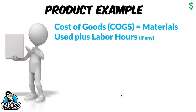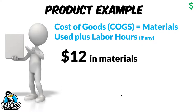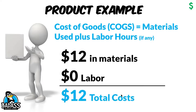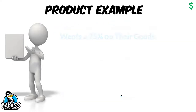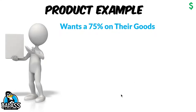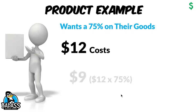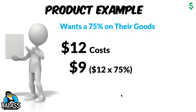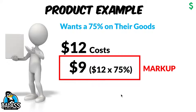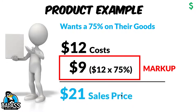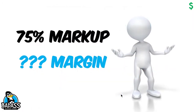Now let's do another example to help out. Let's say a business gets a new item to sell and that item costs them $12. There's no labor involved — they stick a price on it and put it on the shelf or their online store. The business wants a 75% markup on all their items. So we take the cost of $12 and multiply it by 75% — that means the markup is $9. So when they go to set their price, it's $12 plus $9, which equals $21. At this point, we know we have a 75% markup. But what is their gross margin?